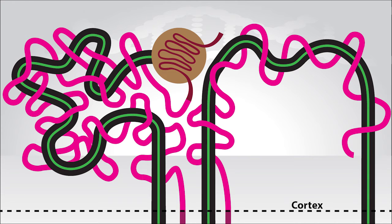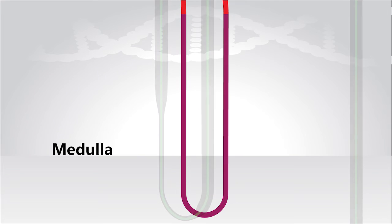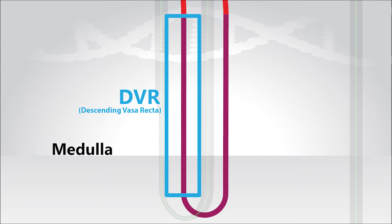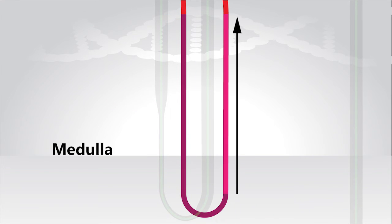Now segments of the peritubular capillaries will branch and enter the medulla, and as they do they form the capillaries that make up the vasa recta. Notice how the vasa recta enters the medulla and descends towards the base. This segment is referred to as the descending vasa recta, which is abbreviated DVR. Now the DVR then makes a 180 degree turn and ascends up through the medulla until it reaches the cortex.